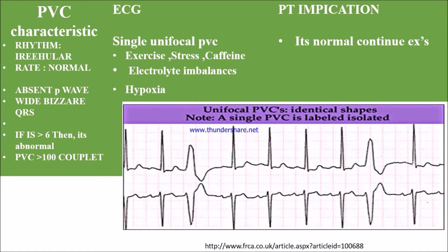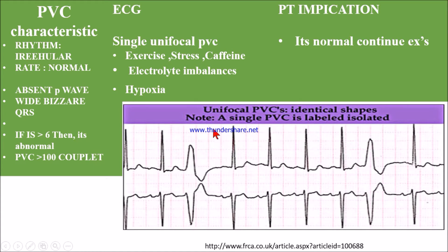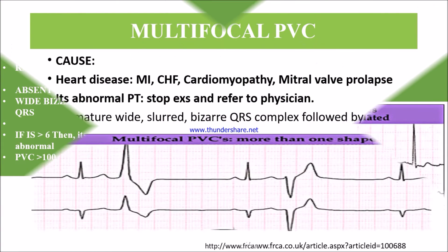If PVC is greater than 6 per minute, it is called a couplet. This is a unifocal PVC — it is identical in shape. With unifocal PVC, we can continue with the exercise stress test because it may be due to some hypoxia or electrical abnormality. As a physiotherapist, if it is a single PVC, it is not abnormal. Only if it is greater than 6 or multifocal is it considered abnormal. Unifocal PVC occurs due to stress, caffeine intake, electrolyte imbalance, or hypoxia — so we can continue with exercise.